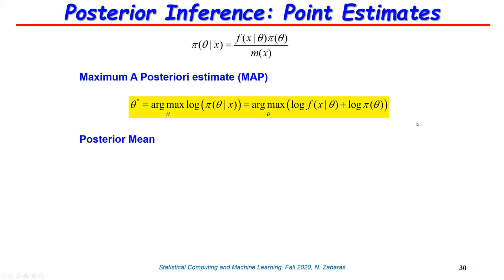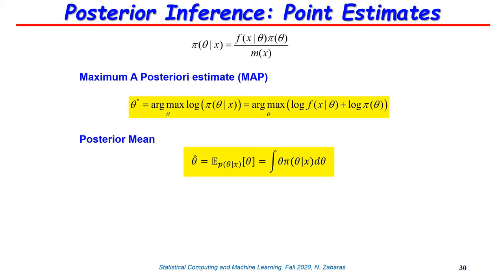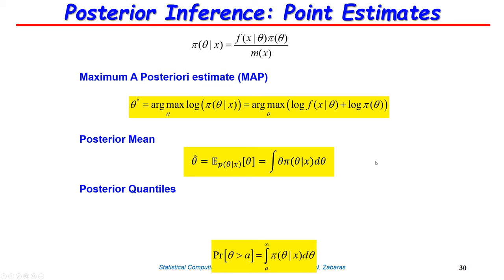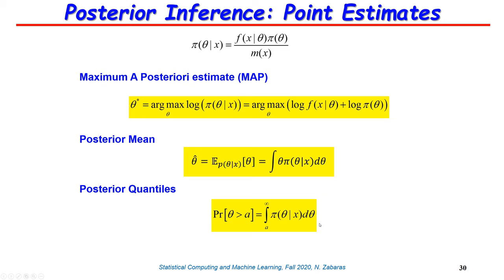The posterior mean is in many occasions a way better estimate of the parameters than the MAP estimate, although computing the integral may be harder than solving the maximization problem. You can also compute posterior quantiles: the probability that theta is greater than some value a equals the integral of the posterior from a to infinity.